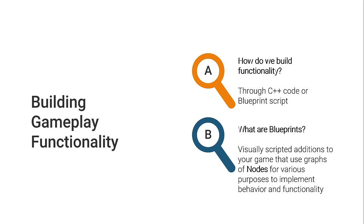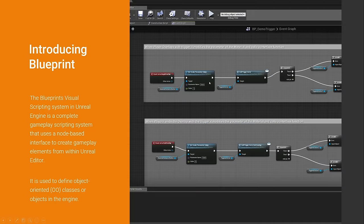But what are Blueprints? They are visually scripted additions to our game, and those additions are through nodes that you can add in graphs. They are used for various purposes to implement behavior and functionality. This is how a Blueprint editor looks — the Blueprint Visual Scripting System. It's called a Visual Scripting System because we are drag-and-dropping nodes, and through these nodes, each containing behavior, we can mix and match as we like. It uses a node-based interface to create gameplay elements, and it is used to define object-oriented classes or objects in the game.